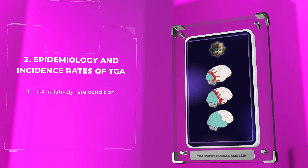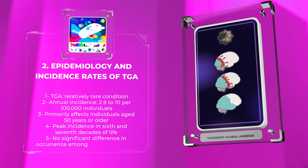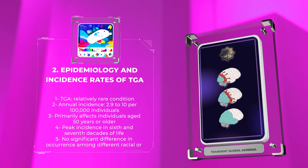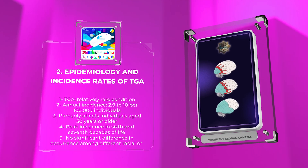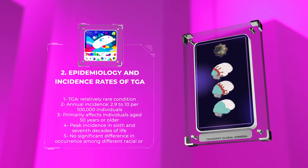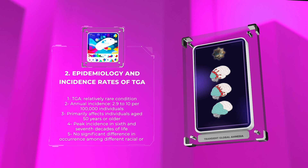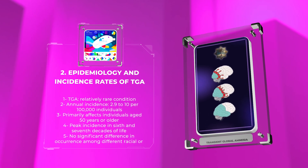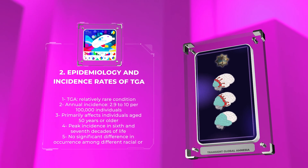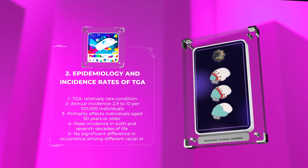TGA is a relatively rare condition, with an estimated annual incidence of 2.9 to 10 per 100,000 individuals. It primarily affects individuals aged 50 years or older, with a peak incidence in the sixth and seventh decades of life. Gender distribution is relatively equal, and there is no significant difference in occurrence among different racial or ethnic groups.